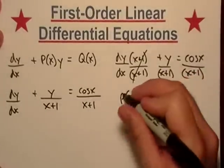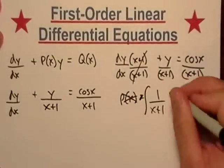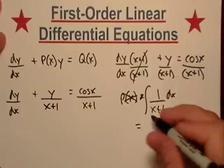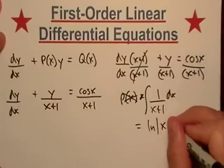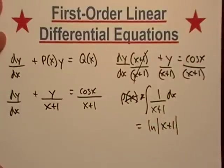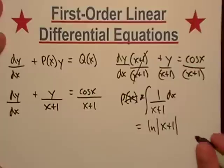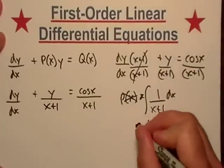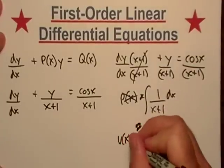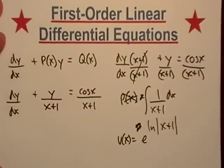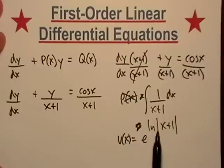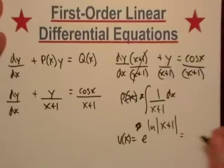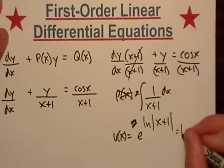So we'll just integrate this thing. We'll integrate that with respect to x, and what do we get? We get natural log absolute value x plus one. And then for our integrating factor, remember we want to raise this to the power of e.